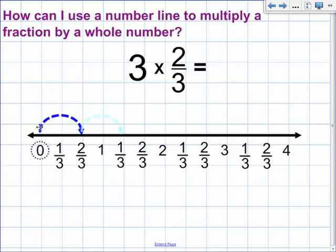we move two-thirds. From the spot we land, we move an additional two-thirds. And from that spot, we move an additional two-thirds. So I've moved two-thirds three times.